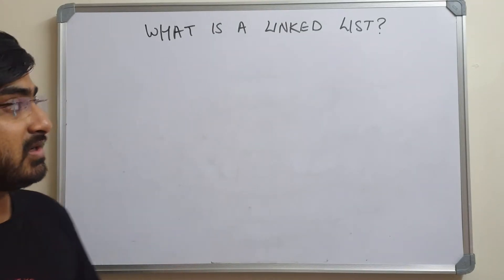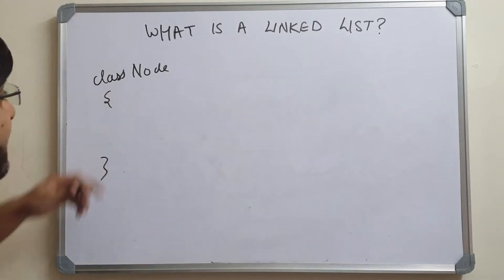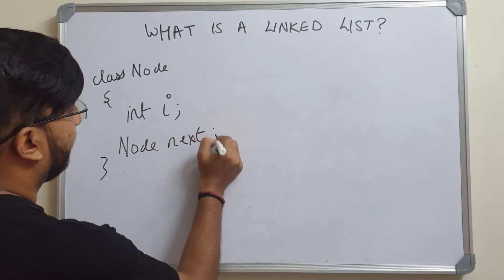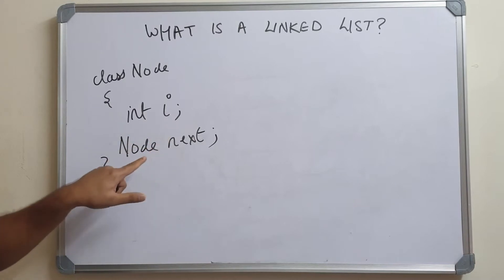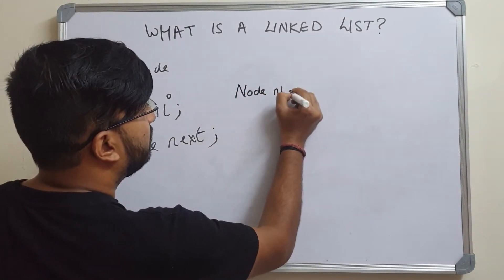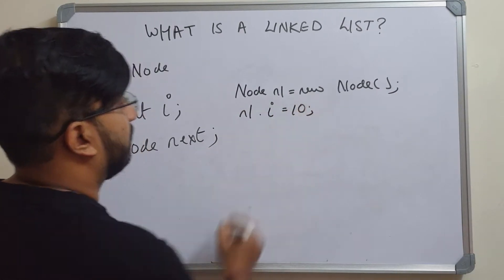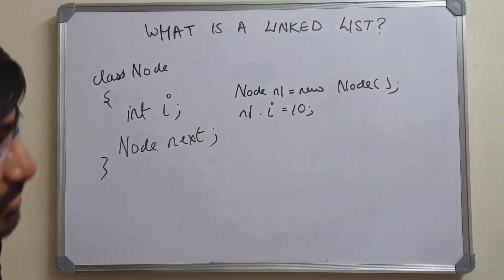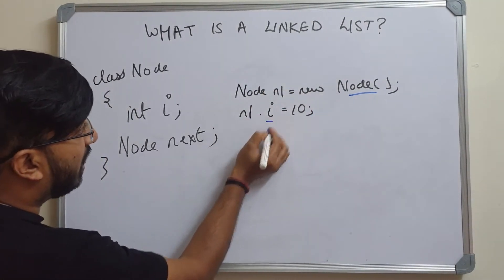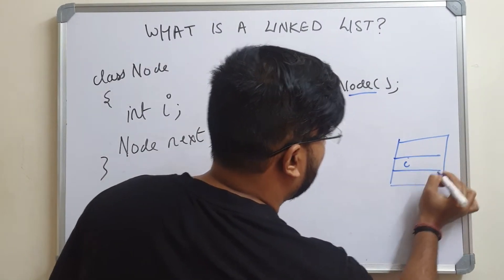Now let's see how a linked list actually works behind the scenes. Suppose we have a class called Node. It's just a class with data members and methods. It has a data member `int i` and it also has a data member of the same type as this class called `next`. So this is a class with two members: one to store an integer and the other to store a reference of type Node. When you create a node and write `Node n1 = new Node()` and set `n1.i = 10`, we are creating an object of Node. The name of the object is n1.